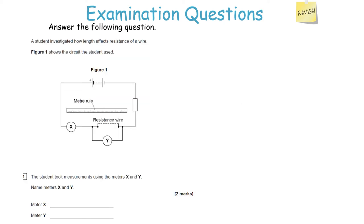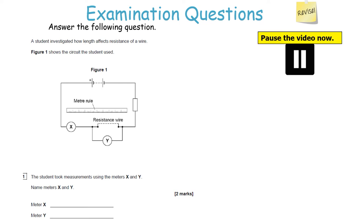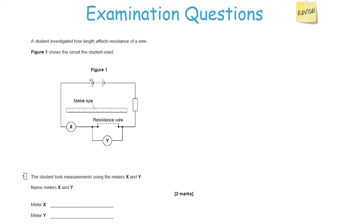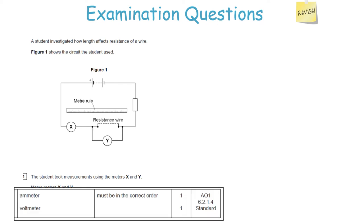A student investigated how length affects resistance of a wire using a circuit with meters X and Y. Name the meters. The ammeter measures current and must be connected in series, as it measures the flow of charge — that is meter X. The voltmeter measures potential difference and must be placed in parallel with the device being measured, straddling the component — that is meter Y.